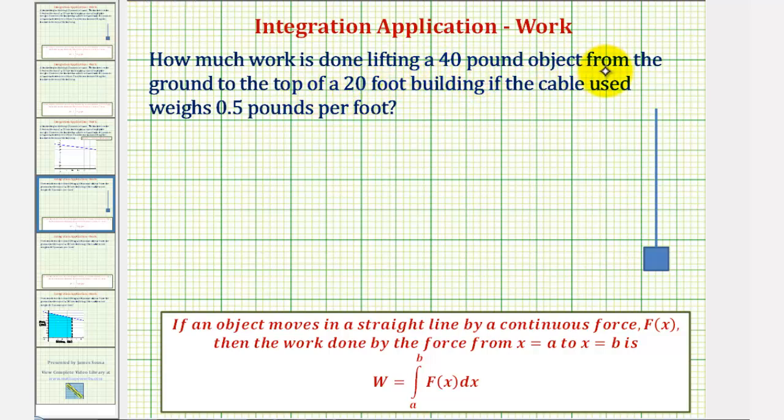How much work is done lifting a 40-pound object from the ground to the top of a 20-foot building if the cable used weighs 0.5 pounds per foot?